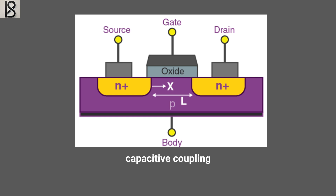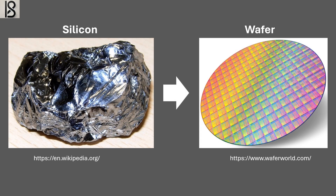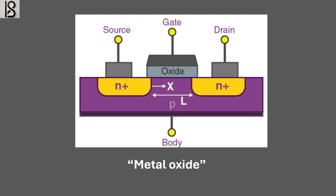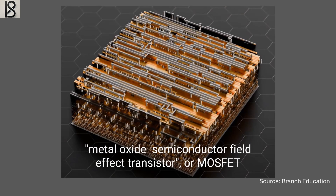This ability to control the flow of these particles is called the field effect. Because the transistor uses the field effect, we call it a field effect transistor. The semiconductor material conducts only part of the time, which is why it's called semi. Initially, some of the first gates were made from metal, but today many gates are made from polycrystalline silicon, which isn't a metal. When combined with the gate oxide, the metal gate creates what's known as metal oxide — giving us the metal oxide semiconductor field effect transistor, or MOSFET.